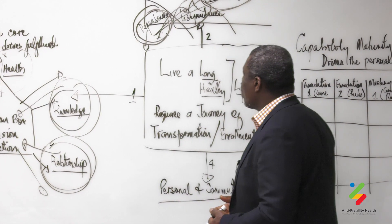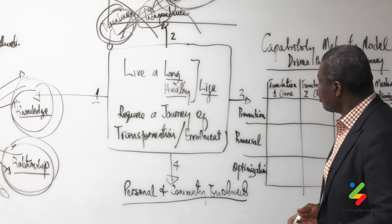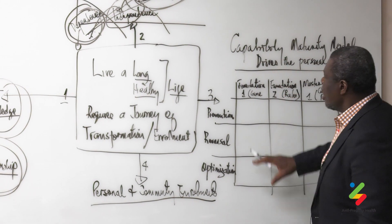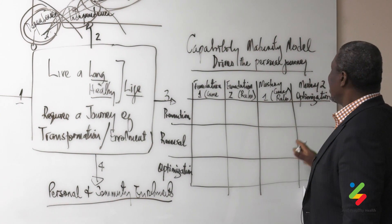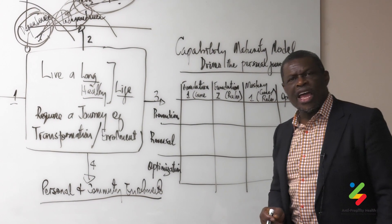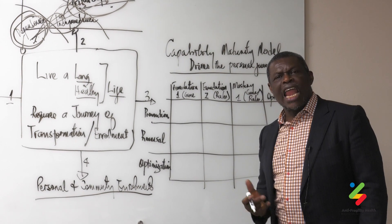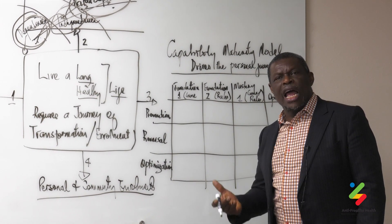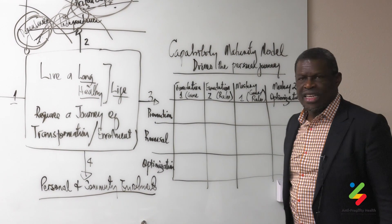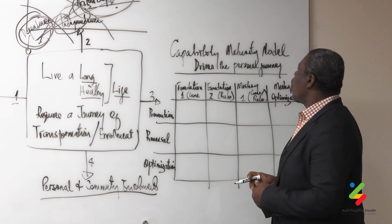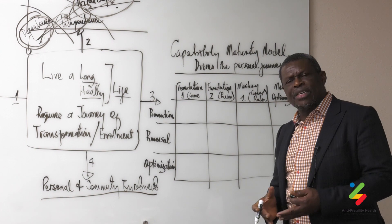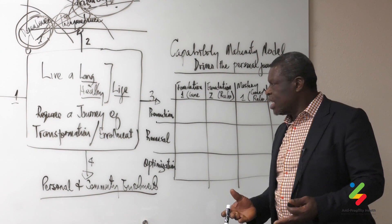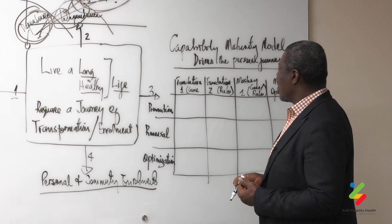So let's look at the third paradigm. It's a paradigm of maturity, which means that there are fundamental steps that are required that would actually allow you to achieve that journey. And we call it what we call a capability maturity model drives the personal and community journey.